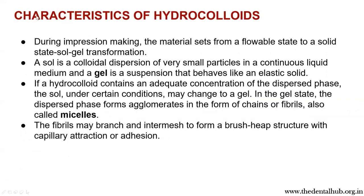Coming to the characteristics of hydrocolloids. During impression making, the material sets from a flowable state to a solid state — this is called the sol-gel transformation. A sol is a colloidal dispersion of very small particles in a continuous liquid medium, whereas a gel is a suspension that behaves like an elastic solid. If a hydrocolloid contains an adequate concentration of the dispersed phase, under certain conditions it could change into a gel. In the gel state, the dispersed phase forms agglomerates in the form of chains or fibrils, also called micelles. These fibrils may branch and intermesh to form a brush heap structure with capillary attraction or adhesion.